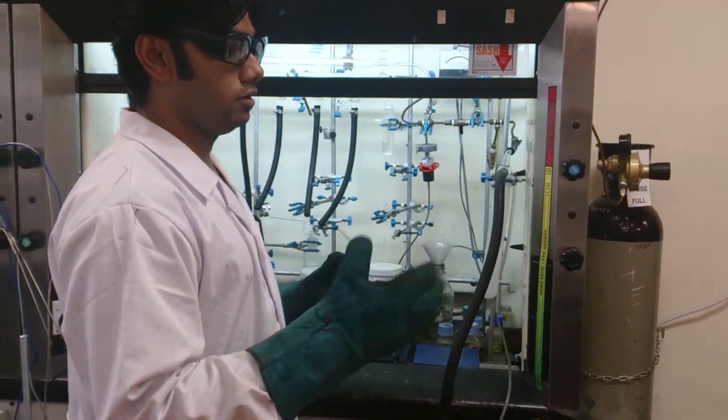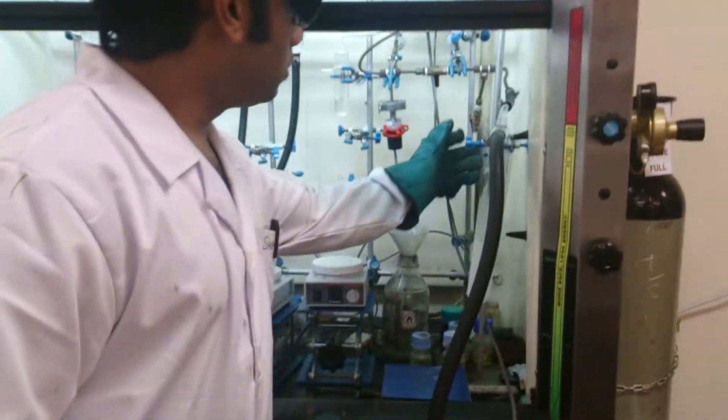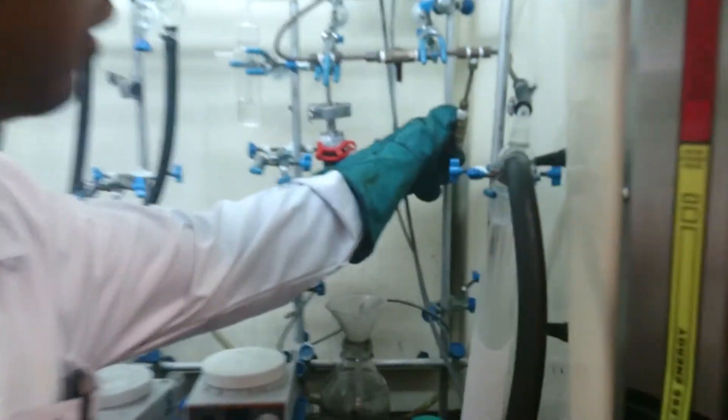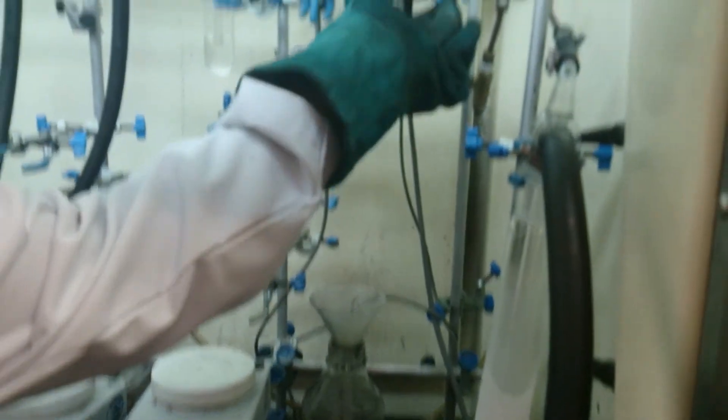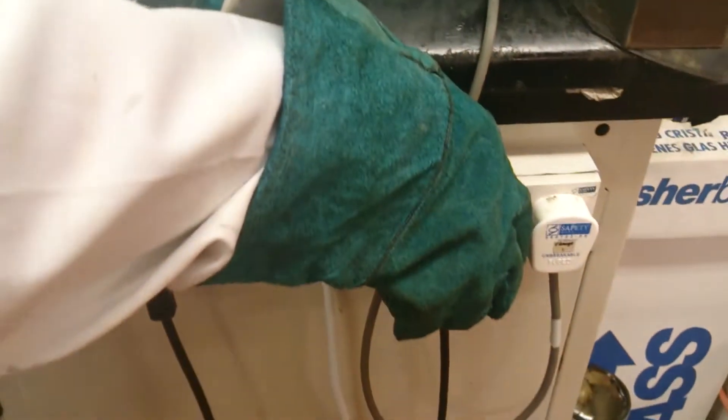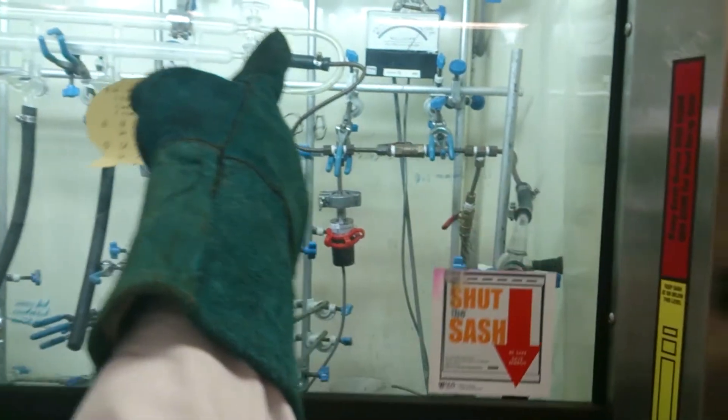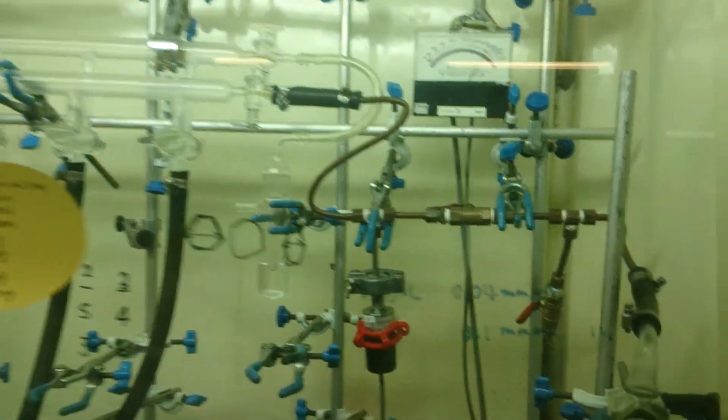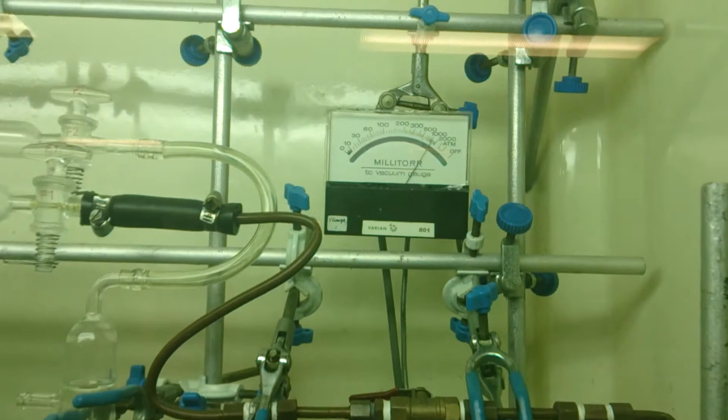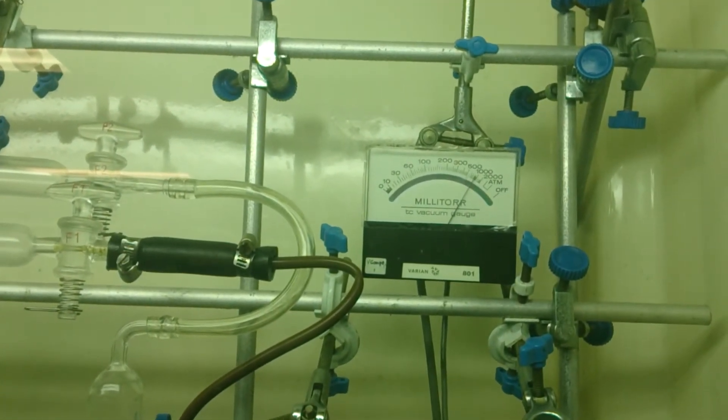So before the Dewar flask in the cold trap, we need to switch on the vacuum. So firstly we will close this air vent and open the vacuum vent and switch on the plugs for the vacuum gauge and the pump. So as you can see that the vacuum will have started to rise. The pump is taking out the air from the Schlenk line and the copper tubing.